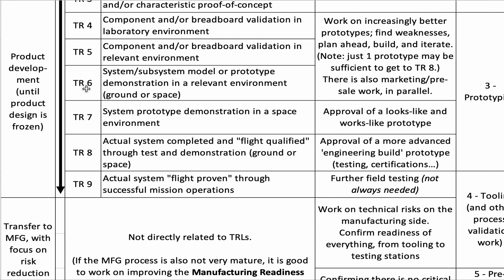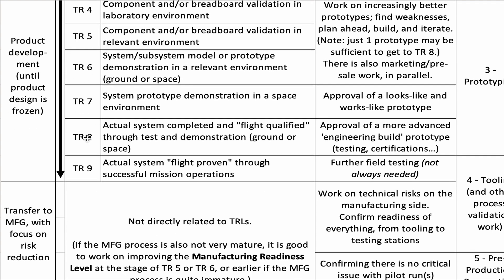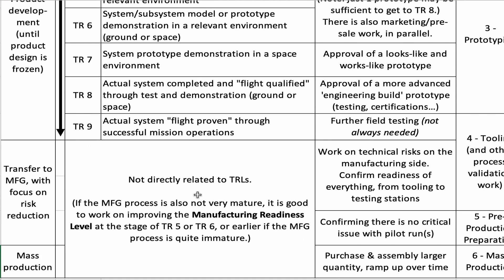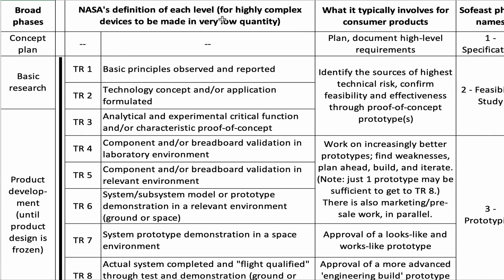You start at the same time in parallel to also develop the manufacturing process. You keep making your product design more and more firm, specified into the small details and all confirmed. At the same time, you're bringing the manufacturing process up to speed. But technology readiness level is really all about product development, not about process development. And mass production — NASA doesn't even care about mass production.